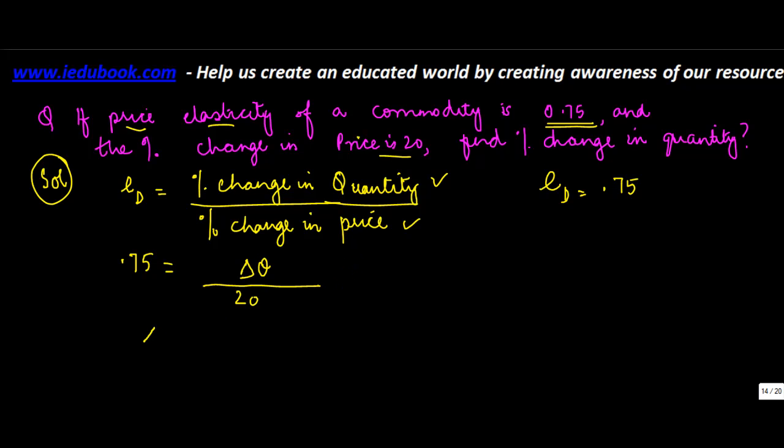Well, it's as simple as it can get. So delta Q is equal to 0.75 into 20, which is equal to 15. So there's a 15% change in the quantity demanded, and that's the solution for the problem at hand. Very simple.